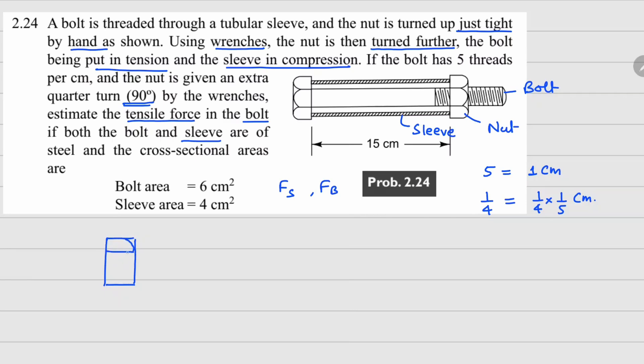When we are trying to move this nut inside, your sleeve is going through compression. Because it is compressed, it will try to apply a force in this direction on your nut. So the force coming from your sleeve is going to be this way—Fs/2 from here and Fs/2 from the bottom.